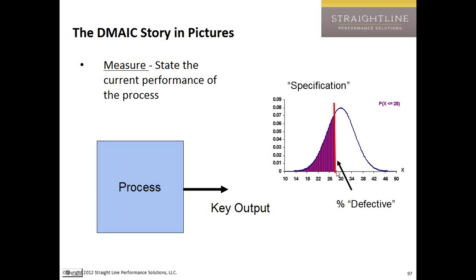In simple terms, look at the current process and whatever the customer specifications might be — like a 30-day turnaround time on an invoice — and just look at what percentage of times do we make it within that 30-day turnaround time and what percentage of times do we not? That's the simplest way of saying where do we stand today.